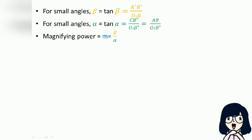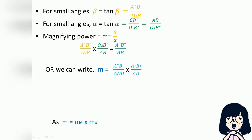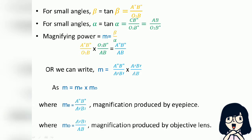For small angles: beta = tan(beta) = A''B'' / O2B''. For small angles: alpha = tan(alpha) = CB'' / O2B'' = AB / O2B''. Magnifying power M = beta / alpha = (A''B'' / O2B'') × (O2B'' / AB) = A''B'' / AB. We can write M = (A''B'' / A'B') × (A'B' / AB), or M = Me × Mo, where Me = A''B'' / A'B' is the magnification produced by the eyepiece and Mo = A'B' / AB is the magnification produced by the objective lens.